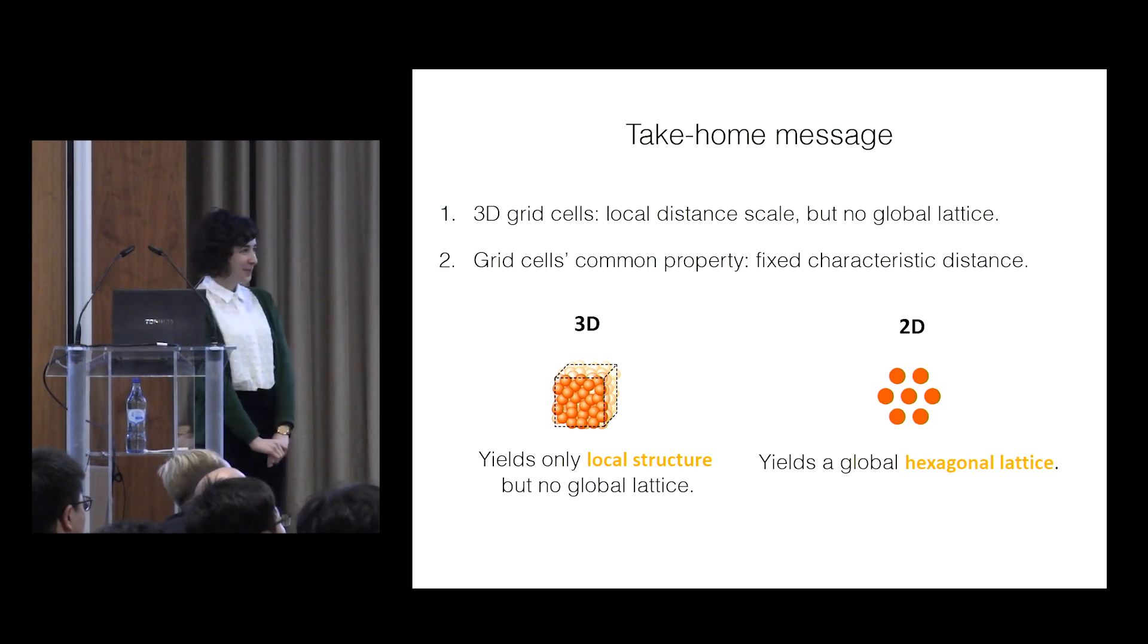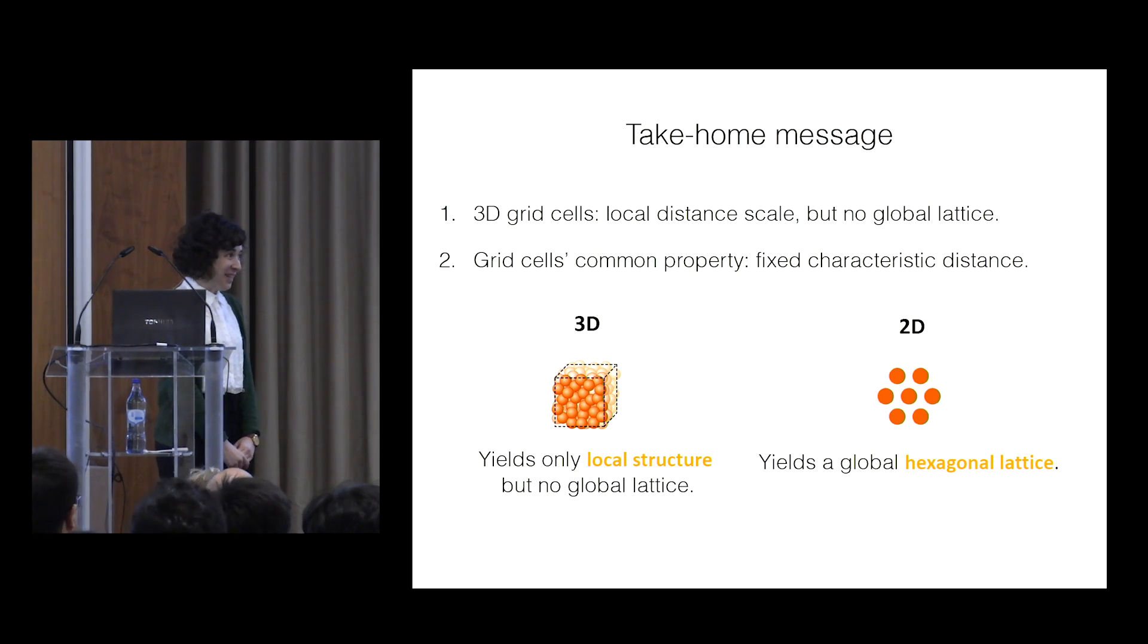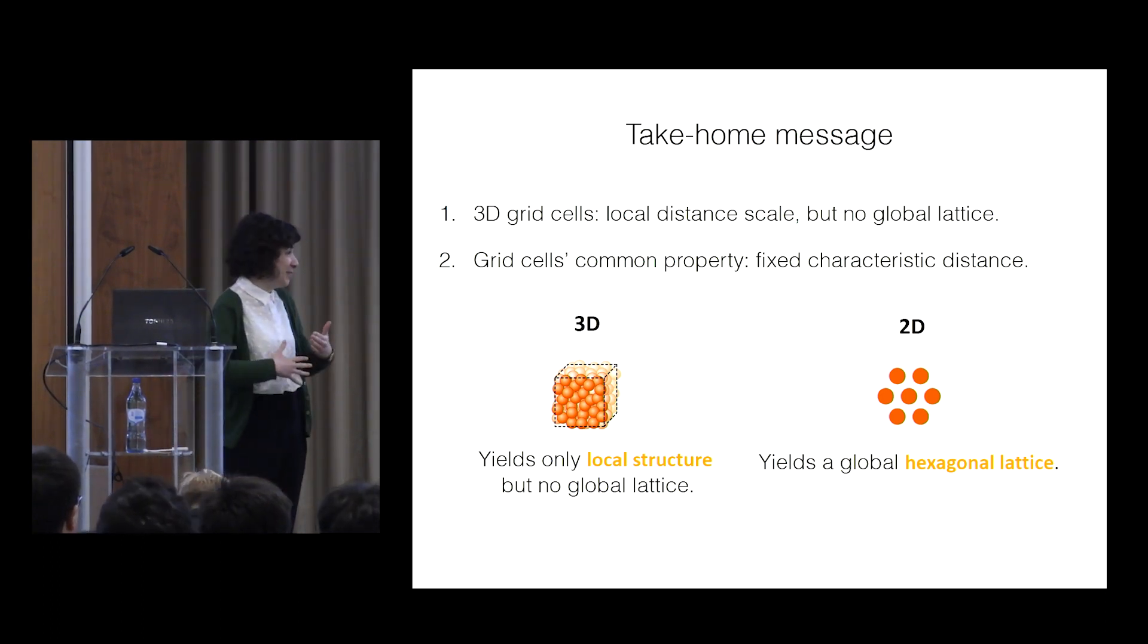Basically, I want to know if the 3D grid cells live on a 3D manifold or a 2D manifold, given that they seem to be able to form a continuous attractor in two-dimensional space. So if you just, yeah, you know the question. It's a good question. We don't know.